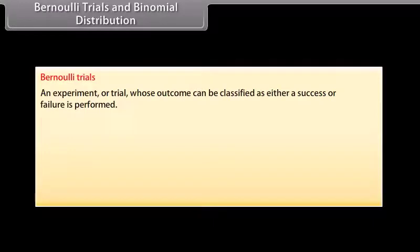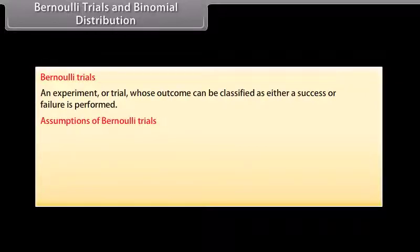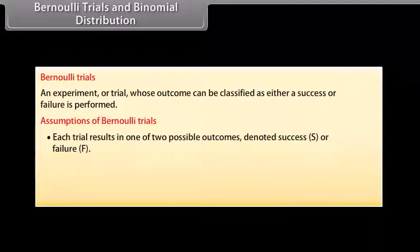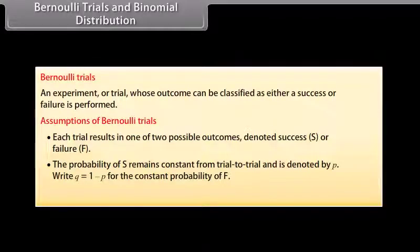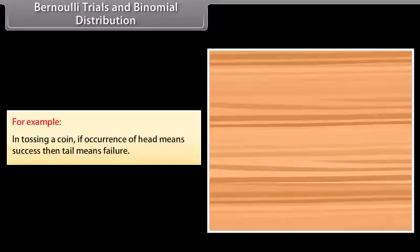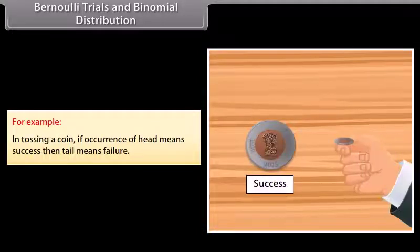Bernoulli Trials and Binomial Distribution: A Bernoulli trial is an experiment whose outcome is classified as either success (S) or failure (F). Assumptions: each trial results in S or F; the probability of success P remains constant; Q = 1 − P is the constant probability of failure; trials are independent and finite in number. For example, in tossing a coin, getting a head means success and tail means failure.